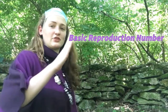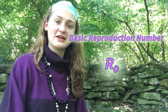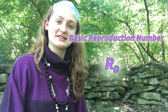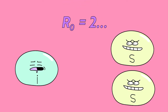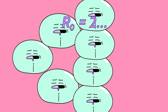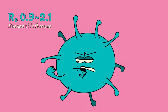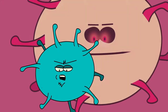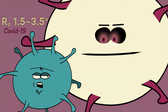The basic reproduction number, or R-naught, is a value used to describe, on average, how many additional cases a sick person will cause. For example, if the R-naught is two, each sick person makes two others sick, and that cycle continues on. Some real-life examples include the seasonal flu, with an R-naught of around 0.9 to 2.1, and as of now, COVID-19's R-naught is around 1.5 to 3.5.